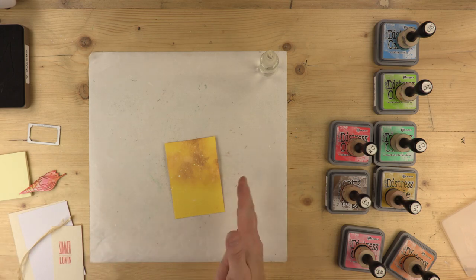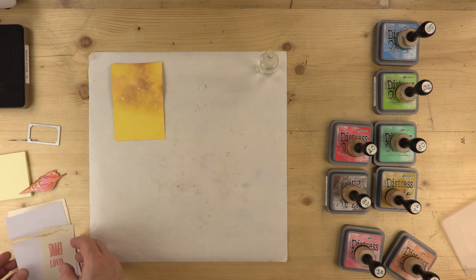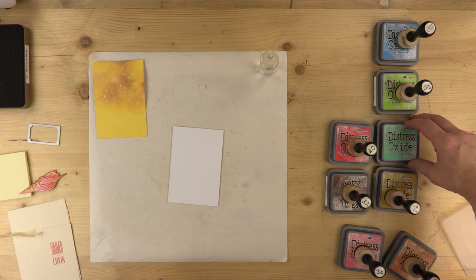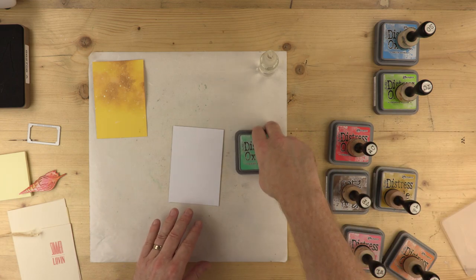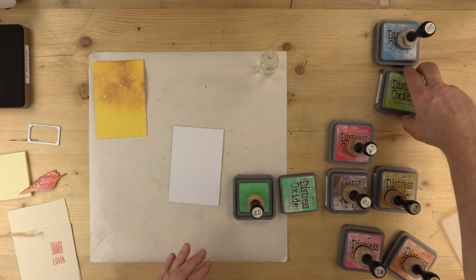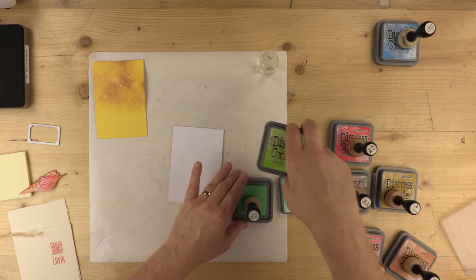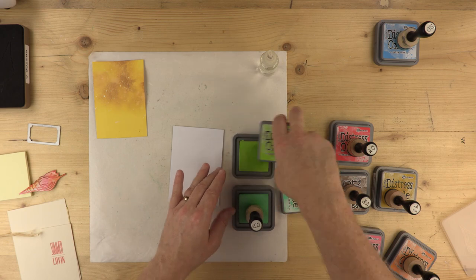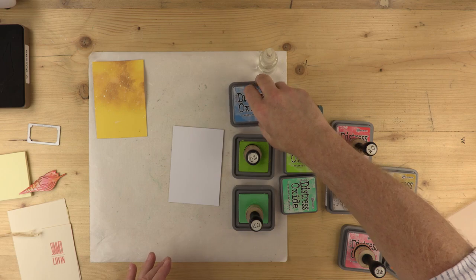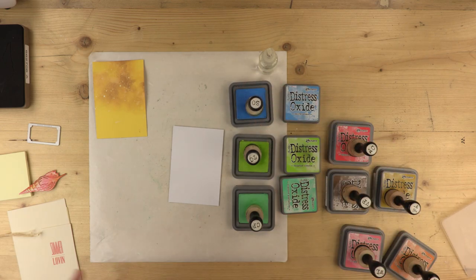Obviously, we want the sea coming into the shore. So I'm going to put that to one side. And I'm going to use three colours, three of my favourite colours. I love this colour blend. We're using Cracked Pistachio, followed by Twisted Citron and what else but a salty ocean.